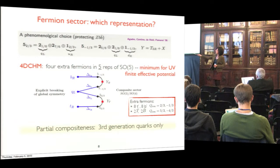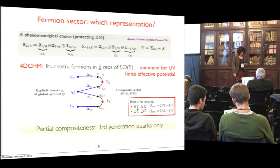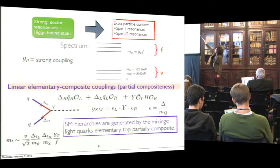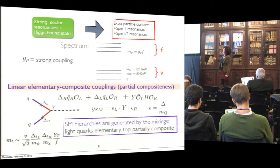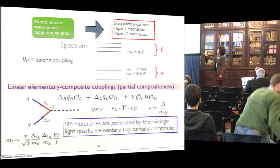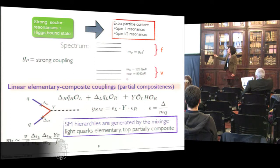For simplicity, we allow partial compositeness only for the third generation quarks, so the top is partially composite. Summarizing: we have the strong sector and the extra particle content consists of spin-1 and spin-1/2 resonances with masses at the composite scale, and the sector with electroweak gauge bosons and the Higgs with mass at V. The partial compositeness is realized by linear couplings of the composite sector with the elementary one, and the standard model hierarchies are generated by the mixings.